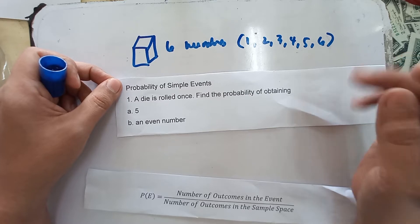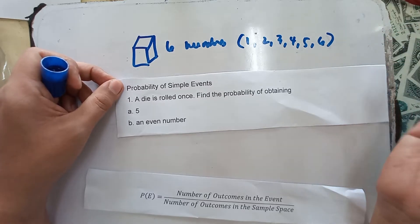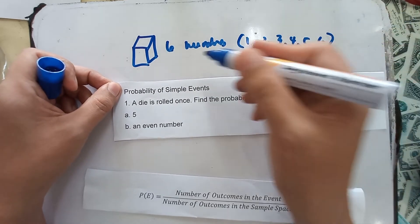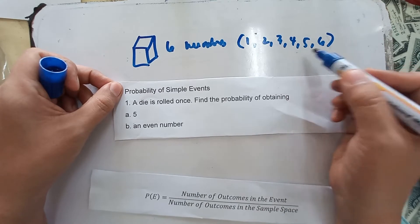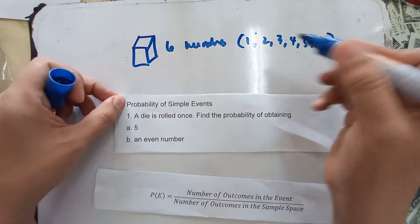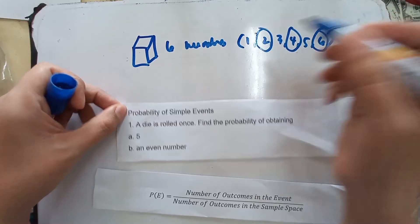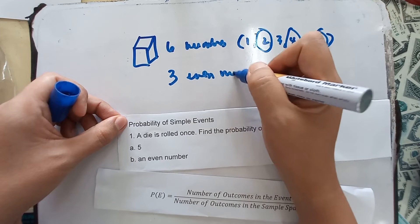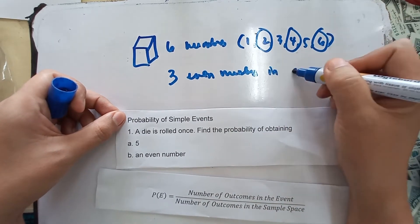Even numbers are like two, four, six, eight, ten, and so on. So, among the six numbers on a die — one, two, three, four, five, six — how many are even numbers? There are three even numbers in a die.